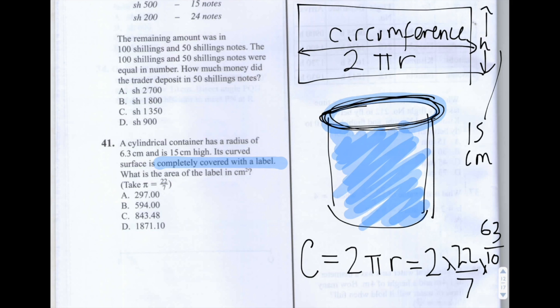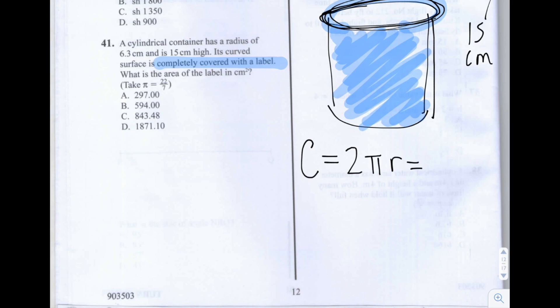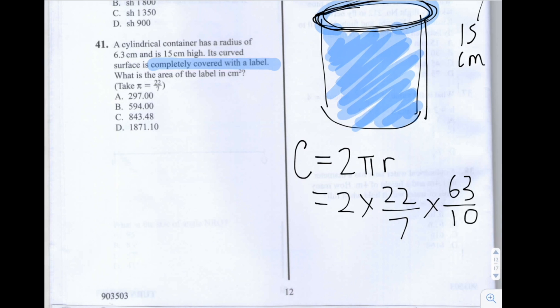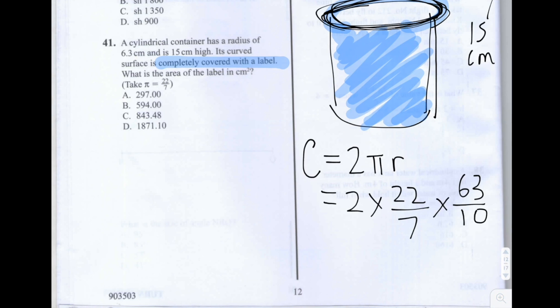So I'm going to now move this down. So we have 2 times 22 divided by 7 times 63 over 10. And that would give us our circumference, which is the area around the rim of the container. Sorry, which is the length of the rim of the container.